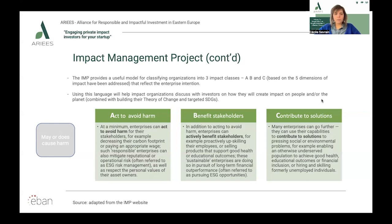Category B is benefiting stakeholders. In addition to acting to avoid harm, enterprises can actively benefit stakeholders by not only avoiding harm for all stakeholders but also maintaining or causing improved well-being for one or more groups of people, including the environment. An example: a carpet manufacturer that produces carpet tiles through environmentally friendly materials and production methods, has achieved net zero carbon emissions, is celebrated as a leading employer for workforce diversity and well-being, and is the buyer and seller of choice in its industry because of its fair practices.